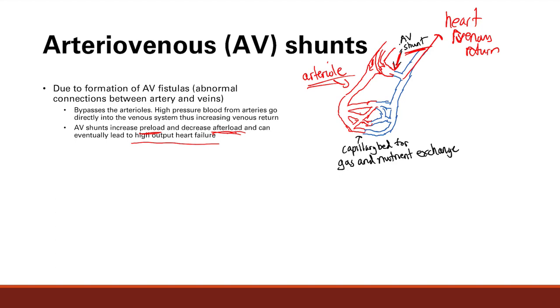AV shunts can form in a variety of diseases, so you're going to encounter them — for example, Paget's disease of the bone and many other things. That's just something to take note of. All right, so that's it for our little talk on AV shunts.